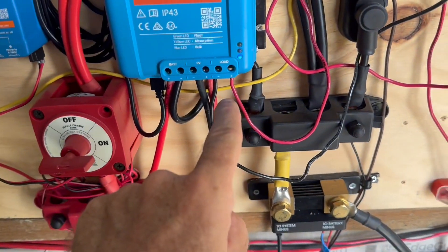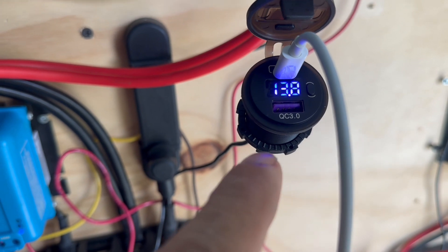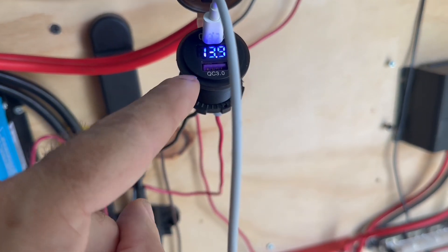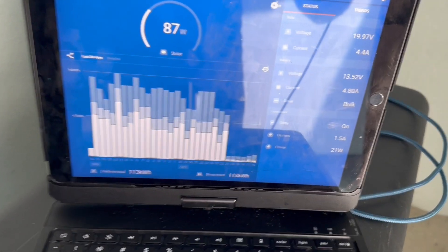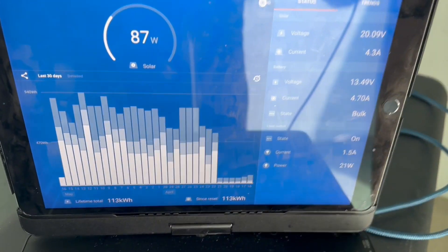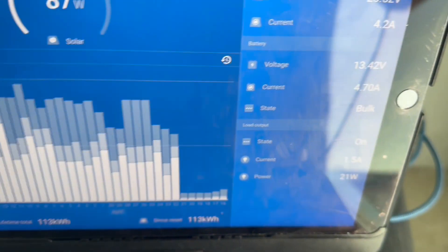So what we've got is coming off the load output, we're hooked up to this little USB adapter. It's registering 13.9. 13.4 is what I'm showing over here. And 13.4 is what we're showing on the Victron app. So we're going to go with that as gold.